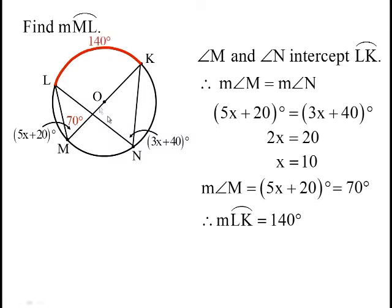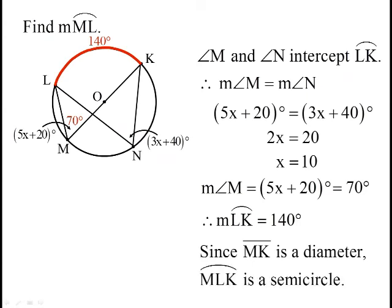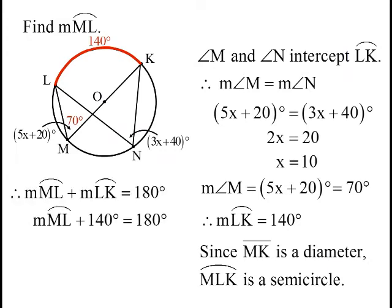Now, how could I find arc LM? Well, I see that MK is a diameter. So if MK is a diameter, that means arc MLK has to be a semicircle, adding up to 180 degrees. So then I can just simply subtract 140 from 180 to figure out ML is 40 degrees.